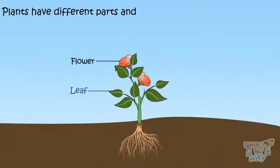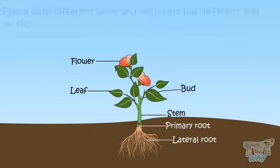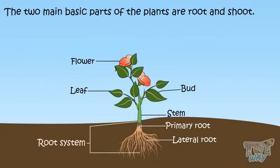Plants have different parts where each part has different roles to play. All plants have two main basic parts: the root and the shoot.